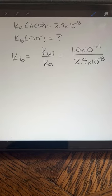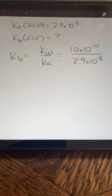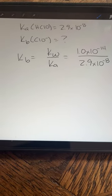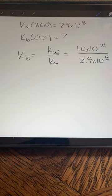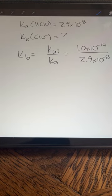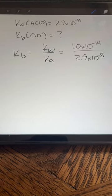This is going to be a video that calculates Kb for the hypochlorite ion ClO minus from the Ka for its conjugate weak acid. Ka is 2.9 times 10 to the minus 8. You see the equation. I will now show you how to answer this on your calculator.